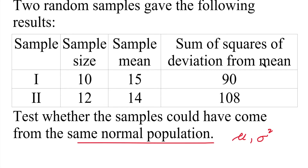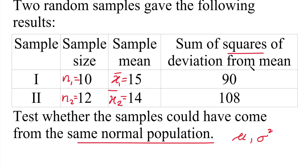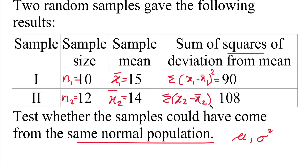First, let's note the given values. First sample size n1 = 10, second sample size n2 = 12. First sample mean x̄1 = 15, second sample mean x̄2 = 14. The sum of squares of deviation from the first mean, that is summation of (x1 minus x̄1) squared, is 90. The sum of squares of deviation from the second mean, summation of (x2 minus x̄2) squared, is 108.